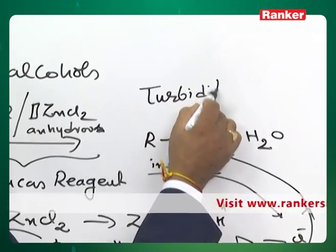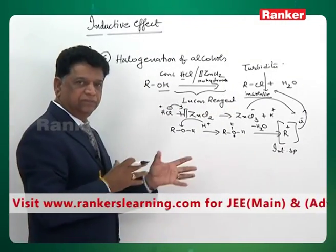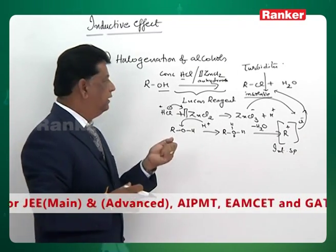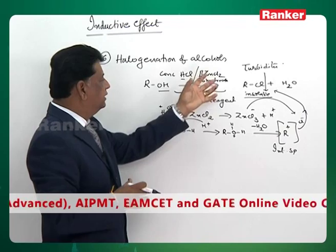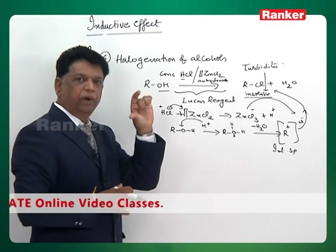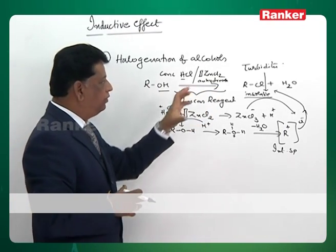A turbidity is formed. The moment RCl is formed, because of the non-solubility of RCl in the remaining aqueous solution. Zinc chloride, HCl, ROH all are soluble in one layer. When RCl is formed, it is insoluble therefore you get turbidity.